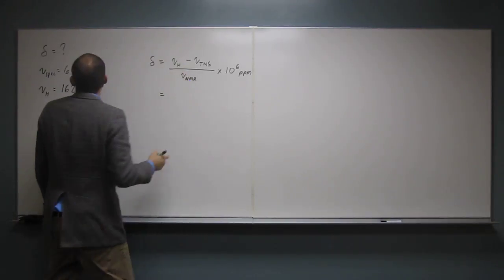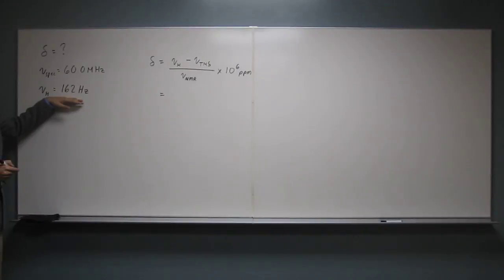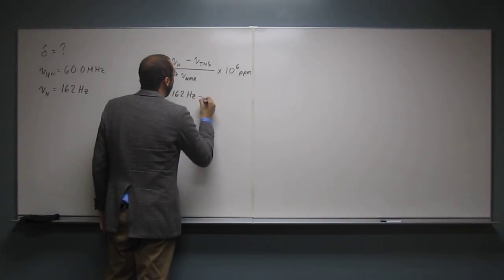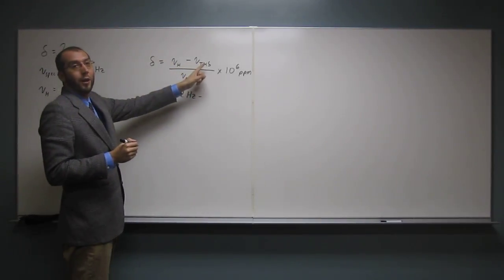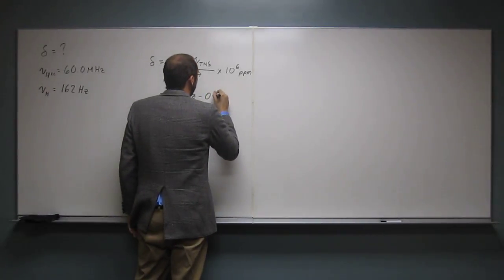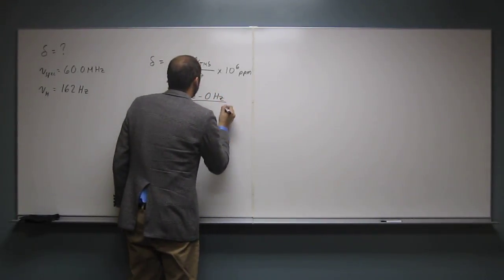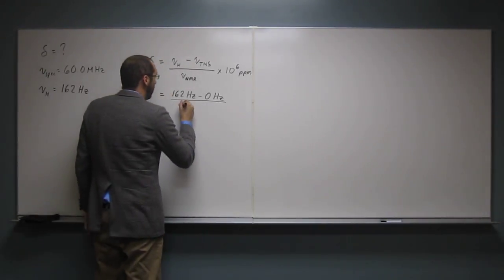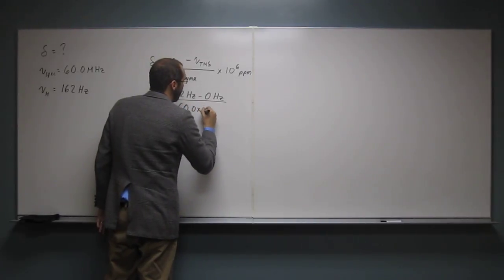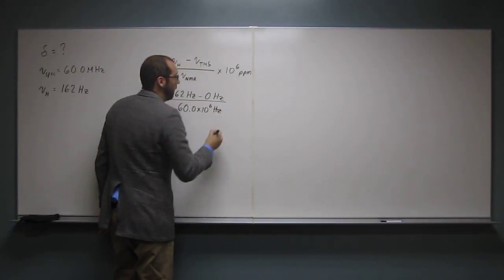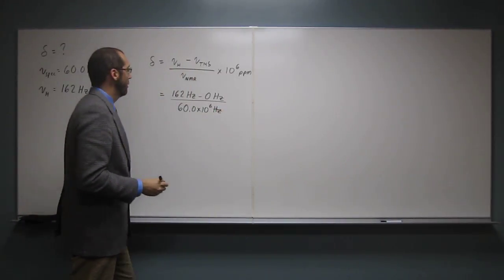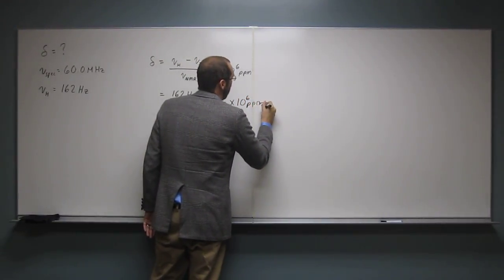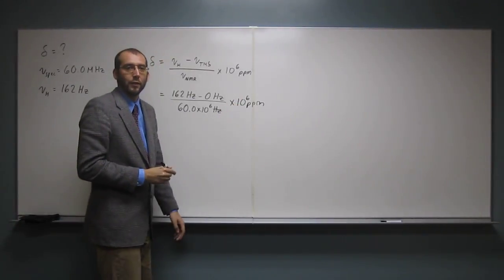So the proton shift, it tells us, is 162 hertz. So 162 hertz, and remember TMS is always zero hertz. So divided by, the frequency of the NMR is 60 megahertz, or 60 times 10 to the 6 hertz, like that. Then we're just going to say times 10 to the 6 PPM. And hopefully you see the 10 to the 6s get canceled out there.